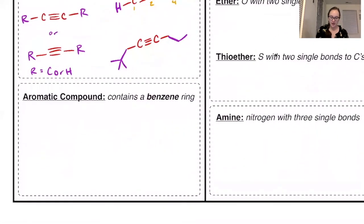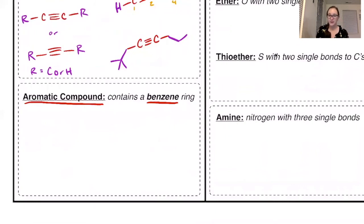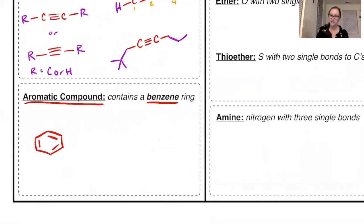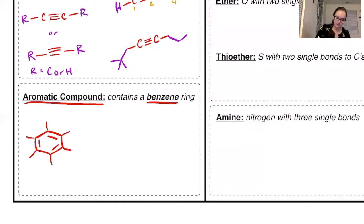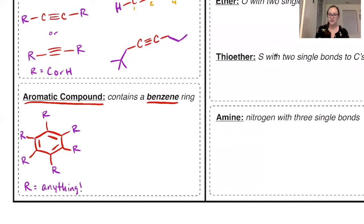Aromatic compounds are compounds that contain a benzene ring. You'll hear benzene a lot in organic chemistry. A benzene ring is a six-membered ring with three double bonds inside it. It can have a variety of R groups around it — at any of the carbons we can have an R group, and in this case R could be anything: carbon, hydrogen, nitrogen, whatever.